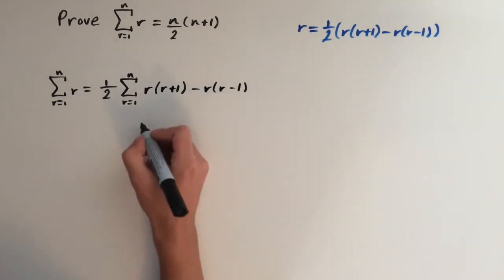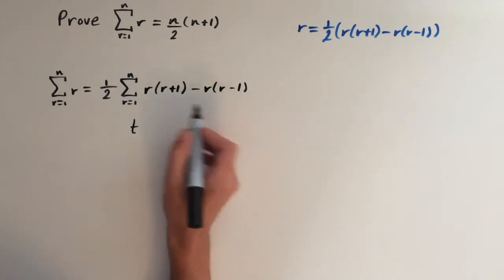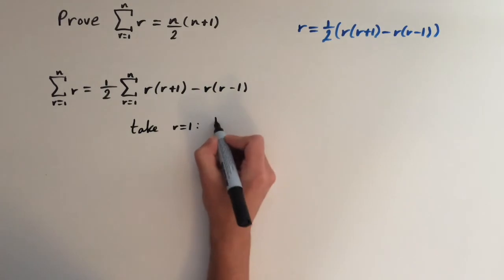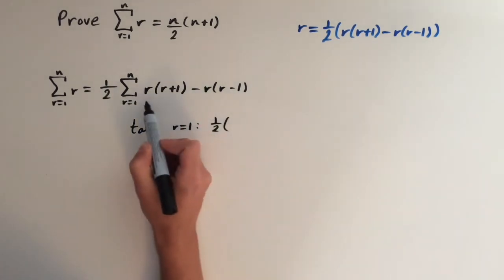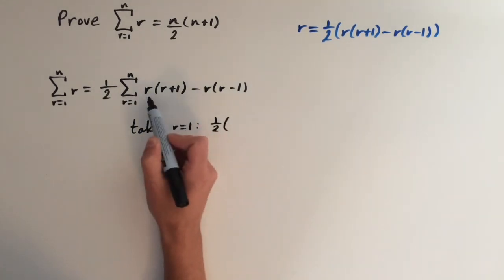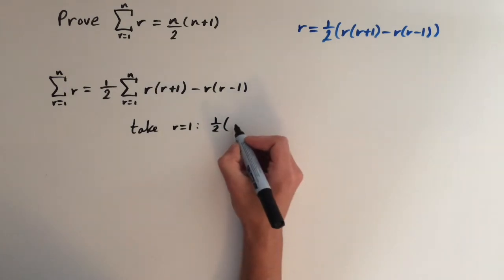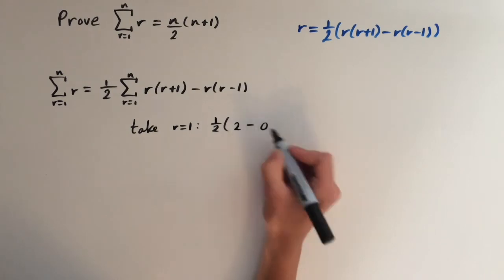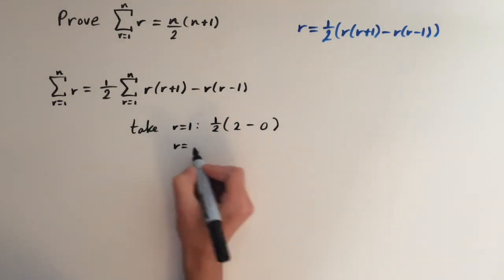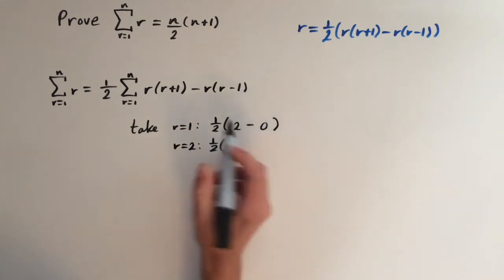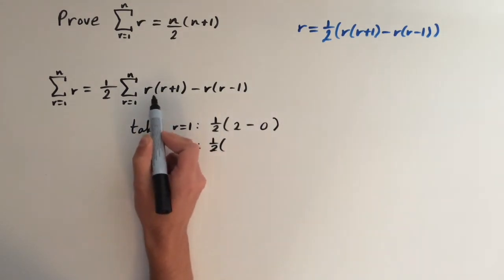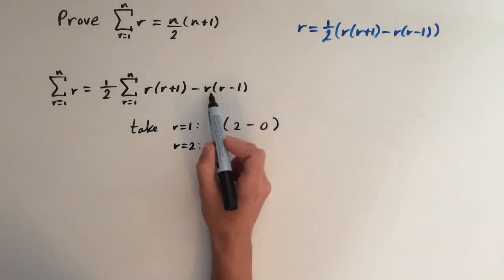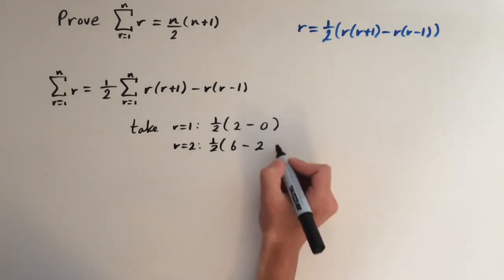What we do is take values of r and plug them in to see what we get. For r equals 1: one half times 1 times (1 plus 1), so 1 times 2 which equals 2, minus 1 times (1 minus 1), so that equals 0. For r equals 2: one half times 2 times (2 plus 1), so 2 times 3 which is 6, minus 2 times (2 minus 1), so 2 times 1 which is 2.